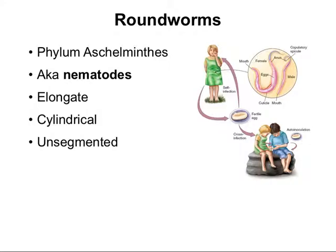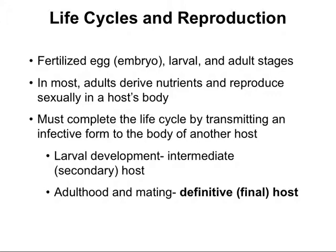Let's look at the general life cycle and reproduction of helminths. It involves a fertilized embryo or egg, a larval stage, and then an adult stage. In most species, the adult worm derives its nutrients from the host, as well as using the host to reproduce sexually. They must complete their life cycle by transmitting an infective form to another host. Larval development occurs in an intermediate or secondary host, and adulthood and mating occur in the definitive or final host. Human infections come generally from contaminated soil, food, and water, or other infected animals.